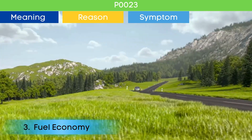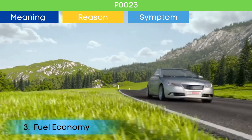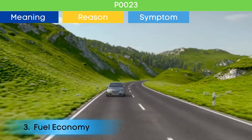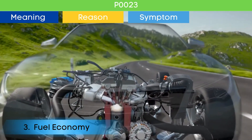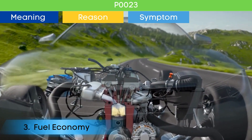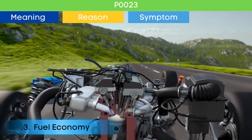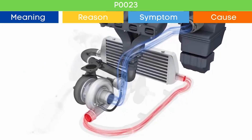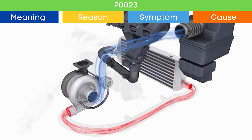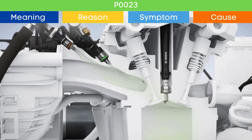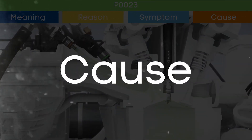Symptom number three: decreased fuel efficiency. Wrong valve opening and closing due to P1023 lead to incomplete combustion of fuel, which results in poor fuel economy. Now that we understand the symptoms of P1023, let's delve into its causes.